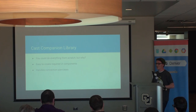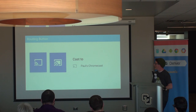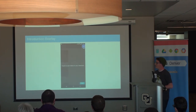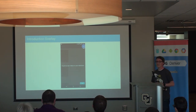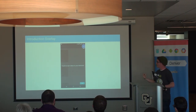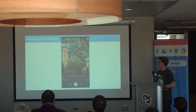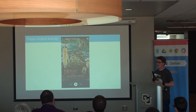A lot of UI components are available in the Cast Companion Library and it handles all your connection issues — if your user drops and reconnects, it all works magically. It provides a routing button you can add to your action bar that handles finding casting devices on the network and connecting. It also provides an introduction overlay so when a user first opens your app, they're informed that casting is available, and it knows exactly where your casting button is and highlights it. There's also a player control activity so users can do all their seeking, skipping, playing, and pausing.